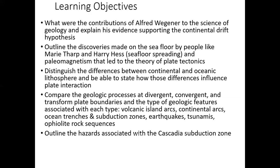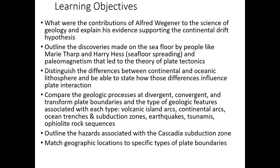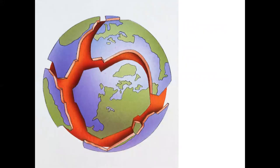We'll look at geologic features associated with each plate boundary type: volcanic island arcs, continental arcs, spreading centers, ocean trenches, subduction zones, earthquakes, tsunamis, and Ophiolite rock sequences. Then we'll examine the hazards associated with the Cascadia subduction zone, which runs from Northern California near Crescent City up through Oregon and Washington, and match geographic locations to specific types of plate boundaries.